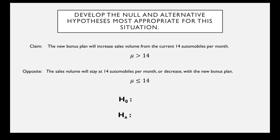Now we need to figure out which one is the null and which one is the alternative. The null hypothesis always has the equality in it. So our null hypothesis is μ ≤ 14.